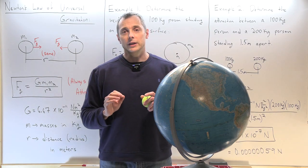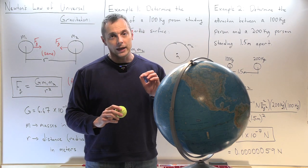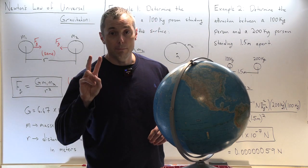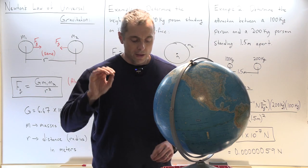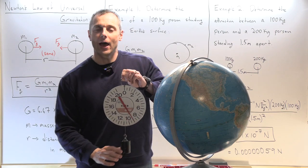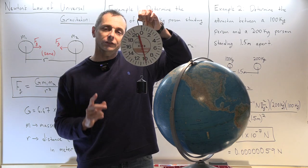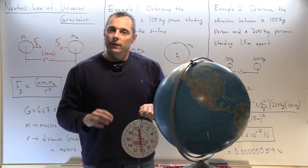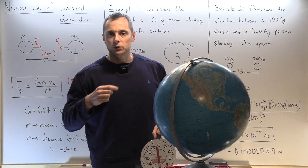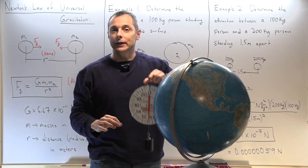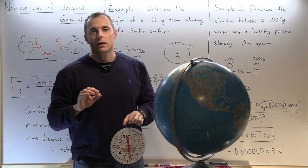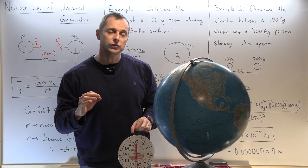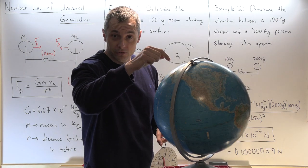Hello physics students. We just completed Gravitation Part 1, where we studied and analyzed the motion of objects only under the influence of the force of gravity. In our analysis, we used two basic facts which I told you were actually wrong. The facts are that the force of gravity does not vary with altitude, and therefore the acceleration does not vary with altitude — it's always exactly 9.8 meters per second squared in the downward direction. False.